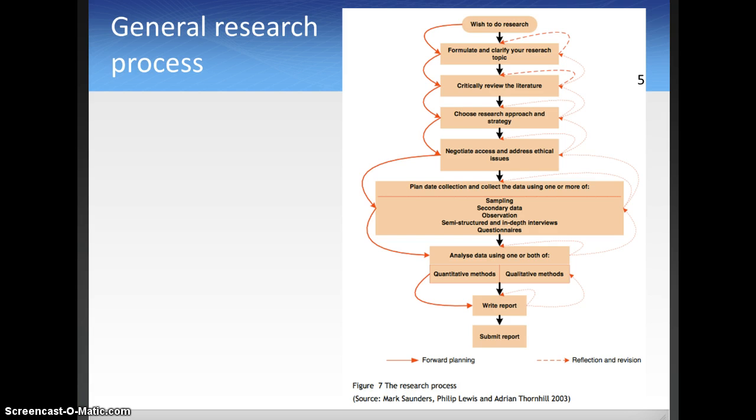Now, if you think of the general research process, another way to look at it is this element here and think of this as a very cyclical element as well. This is another way of looking at the research cycle that we just looked at. You start out with a wish to do research. You start to formulate and clarify your research topic.